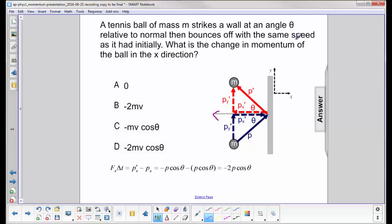Now since we have the same speed after as we did before, initial momentum is the same as final momentum, so we're just going to put p in there. So you have minus p cosine theta. Your initial momentum is in this direction to the right.